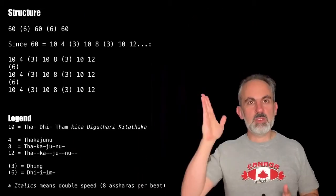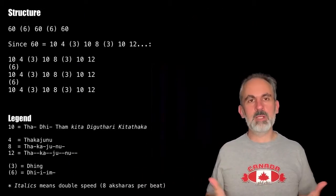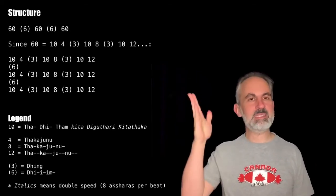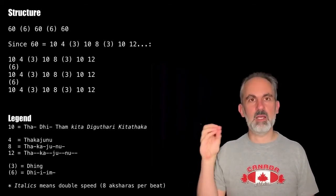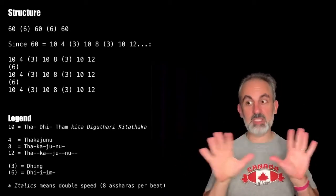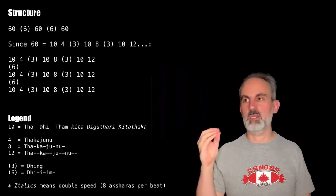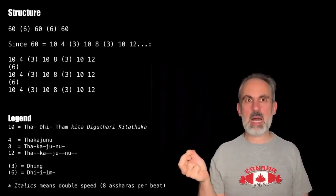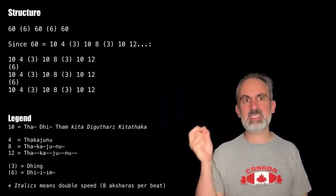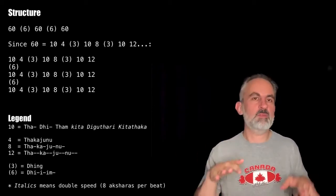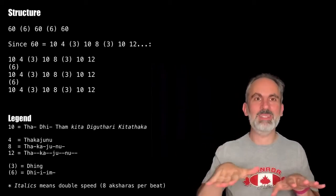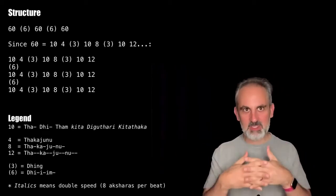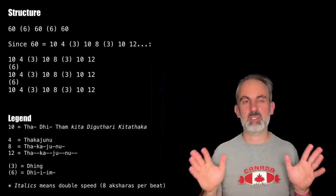Here's the structure for completion's sake, in which you can see that the numbers are unchanged. We still are talking in terms of 60, 6-gap, 60, 6-gap, and 60. And of course, when you look into the 60, you will see that it has an internal structure as well that's very interesting.